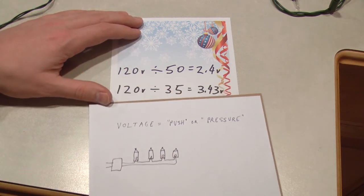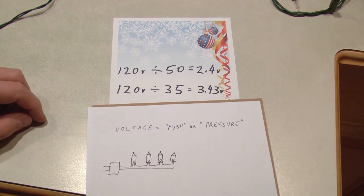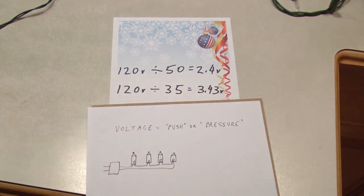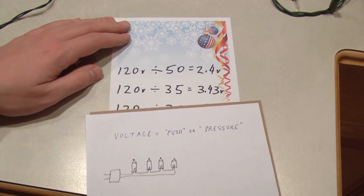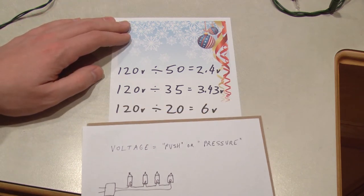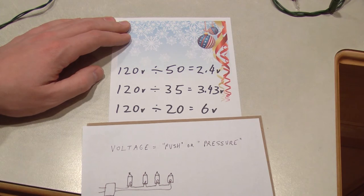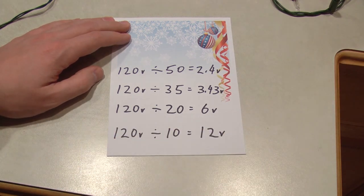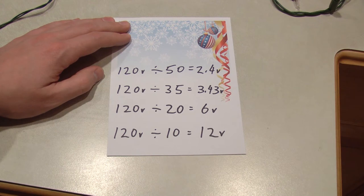Or if you have a set of 35 lights, that same voltage divided among 35 bulbs is 3.43 volts, or we'll say 3.5. Likewise, a set of 20 lights will be 6 volts per bulb, and a set of 10 lights, like you might find in a tree topper, will be 12 volts per bulb. Basic math.